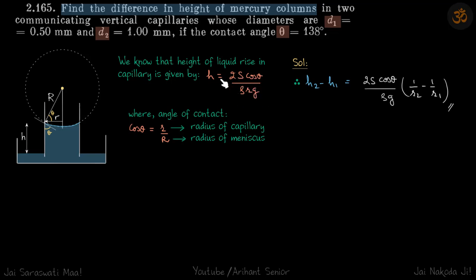The other way of this formula is h equals 2s by ρ into capital R into g, where capital R is radius of meniscus. But because that is not given to us and θ and small r is given, we are writing the formula in this form.